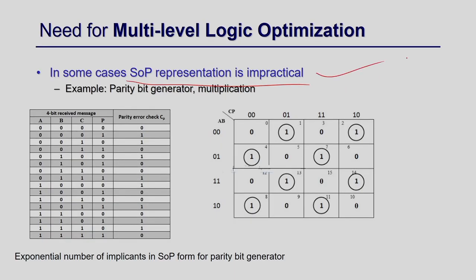Two-level optimization is not always sufficient. First, it is too restrictive — only two levels — and sometimes the SOP representation becomes exponential. The classical example is the parity bit generator. For even parity, the parity bit is 0 if the number of 1s in the input is even, and 1 if odd. For a 4-bit input, there are 16 minterms and exactly 8 are ones — and no Karnaugh map groupings can reduce anything.